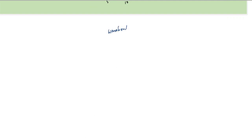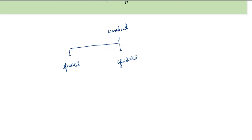The three kinds of wavefronts are: the first kind is called a spherical wavefront, the second type is called a cylindrical wavefront, and the third type is called a plane wavefront. Let's look at each one by one.